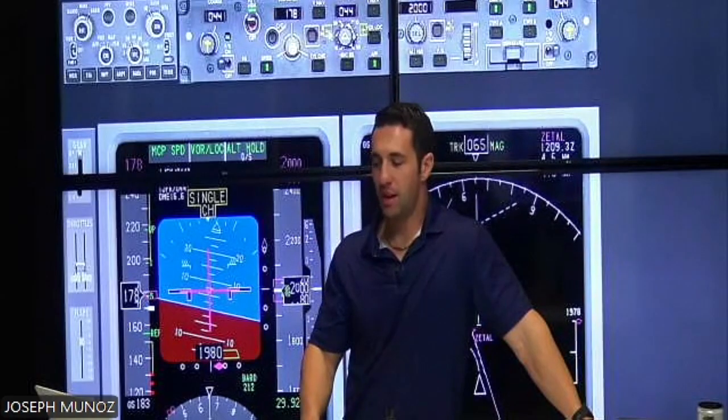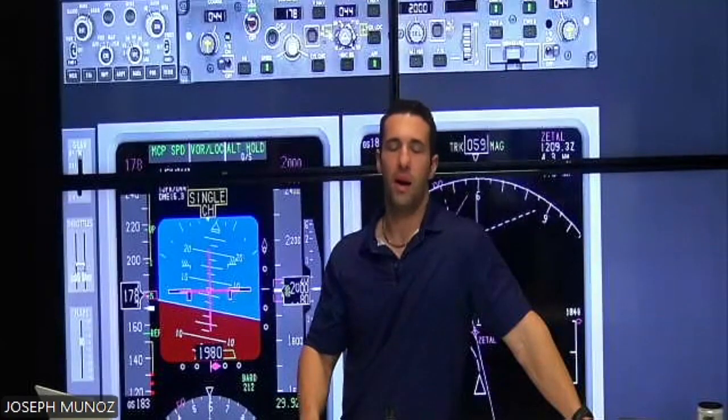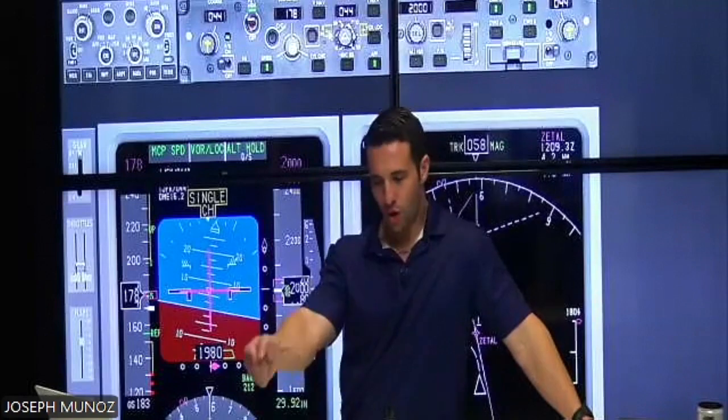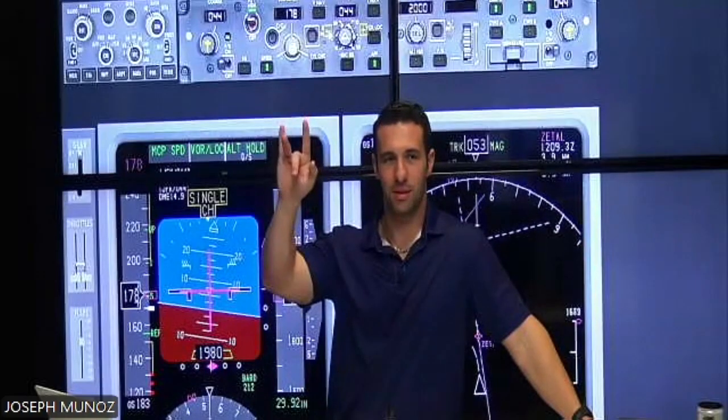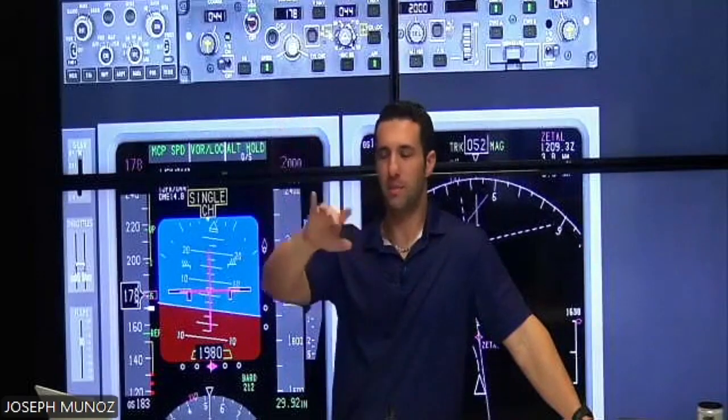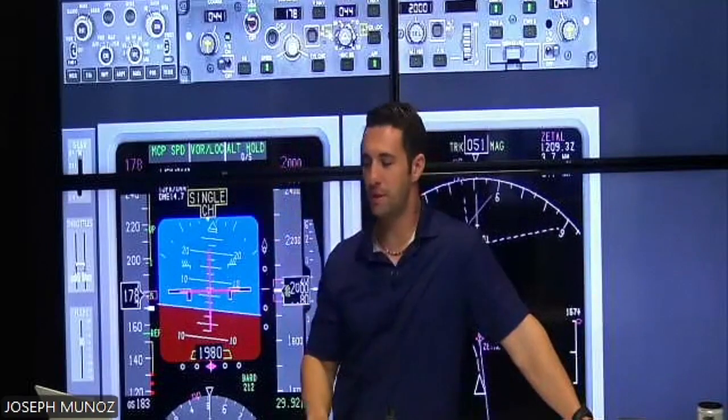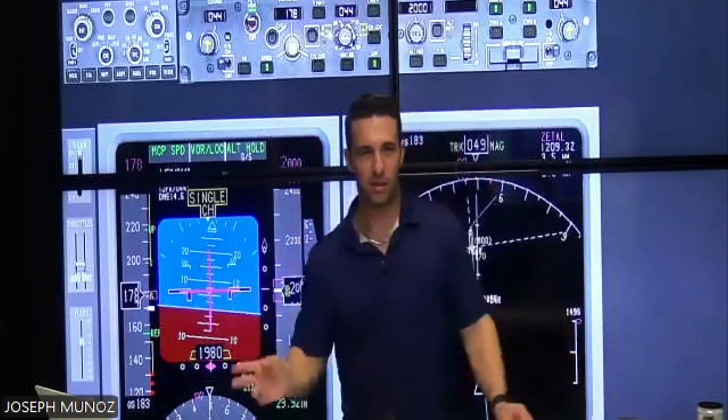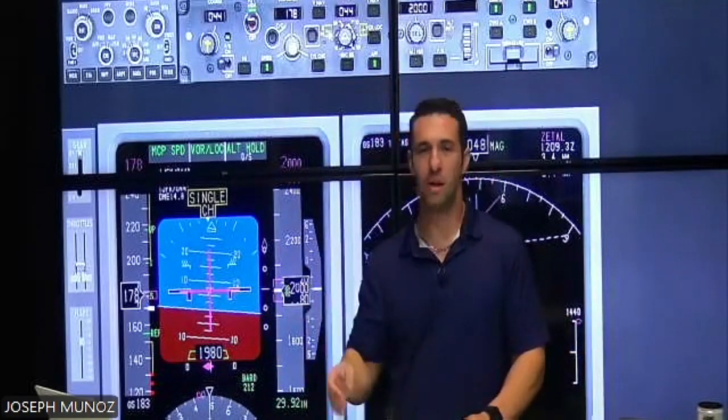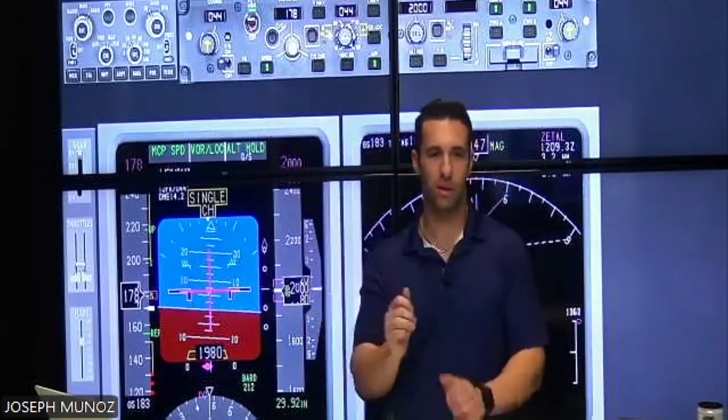And when we see glide slope alive, I'm going to say gear down, flaps 15. At that point, I will also arm the speed brake and we'll put the start switches to continuous. I'll explain that in a minute. And then we're going to reduce the speed to the flap 15 speed. So to recap that, glide slope alive, gear down, flaps 15, speed 15, arm the speed brake, igniters continuous.